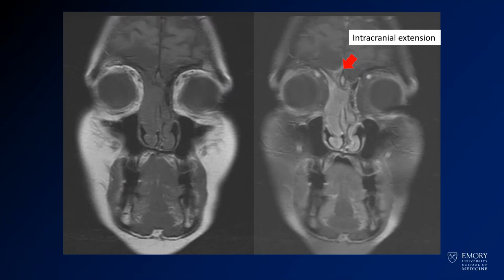Here you see the same thing on MR. You again have the cribriform plate, with mass involving the nasal passages on the right, and then intracranial extension. You also have a little bit of edema in the adjacent portions of the anterior frontal lobe, which is very common with these masses.